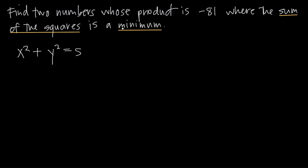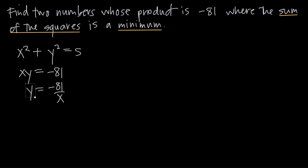Now once you have a function for whatever you're trying to maximize or minimize, the next thing you need to do is make sure it's in terms of only one variable. Right now s is in terms of both x and y. So we go back to the original problem: we've been told the two numbers have a product of negative 81, giving us a second equation x times y equals negative 81. Solving for y by dividing both sides by x, we get y equals negative 81 over x. We can now plug this value for y into our equation.